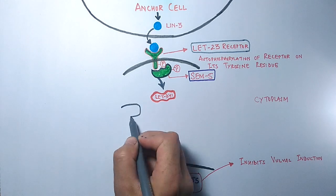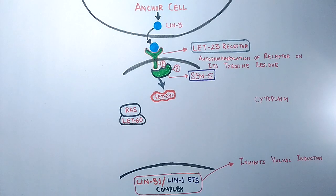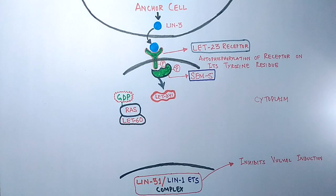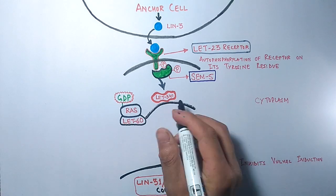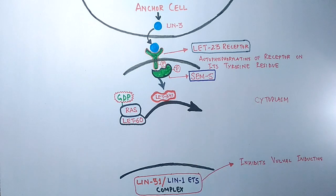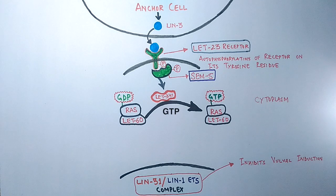In the next step, C. elegans has a RAS analogous molecule called let-60, which has GDP bound and is in its inactive form. But when this inactive let-60 is acted upon by let-341, its GDP is released and GTP is bound to let-60. With this binding of GTP, the let-60 molecule becomes active.